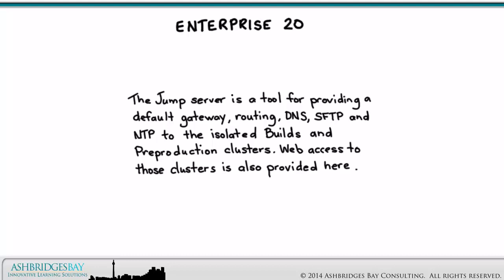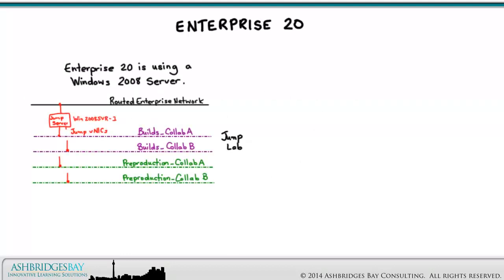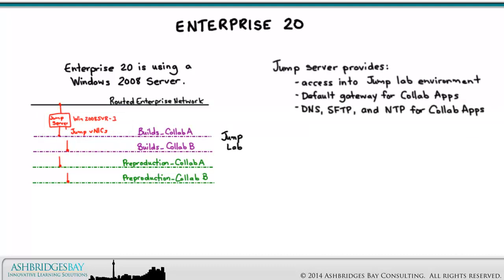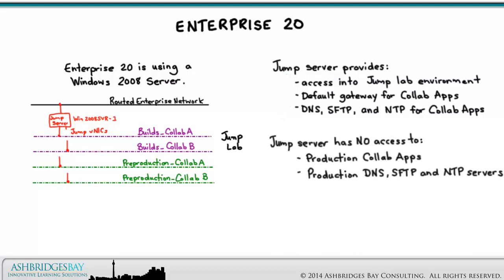We'll build out a complete lab server for our Jump Server. Enterprise 20 is using a Windows 2008 server. The Jump Server provides access into the Jump Lab environment, default gateway for collab apps, DNS, SFTP, and NTP for collab apps, and it could also provide SMTP. The Jump Server has no access to production collab apps or production DNS, SFTP, or NTP servers used by the production collab apps.